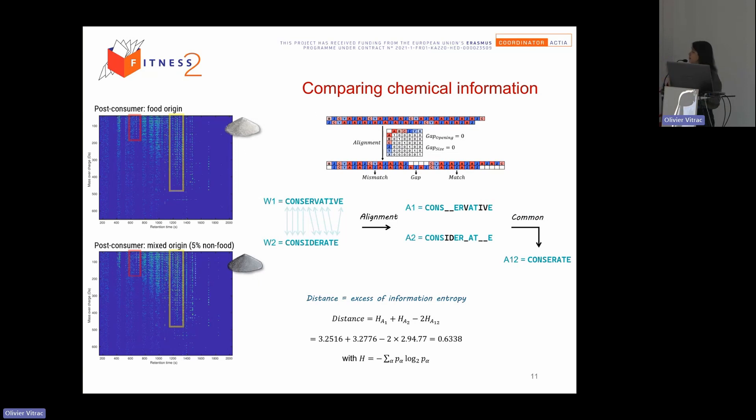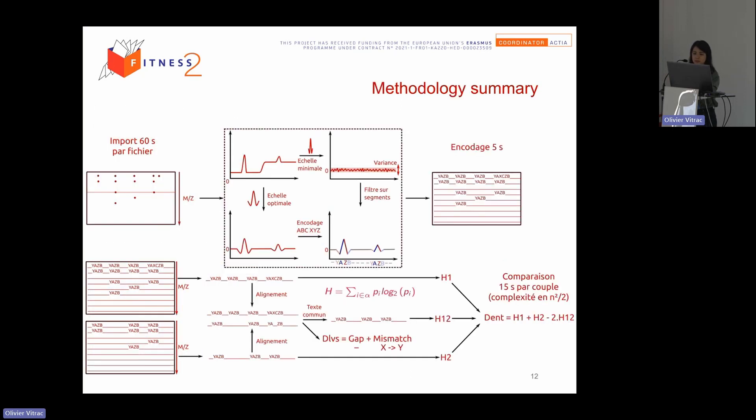By adding the gap. So the gap is the gap to maximize the common sequences. So here, for example, when we add some gap for ID with some gap of V, we have the common sequences, it's considerate. And the distance is inverse of this one. So the distance is accepted information theory. So for each sequence or for each chromatogram, we calculate the distance for two chromatograms. And we can also compare between them.